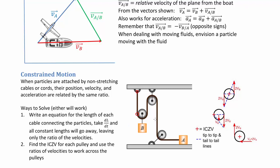The center of the top pulley is also an ICZV since it's a point of fixed-axis rotation. The diagram labels these ICZVs, including a bottom point for another pulley in fixed-axis rotation.